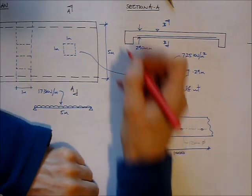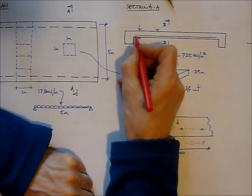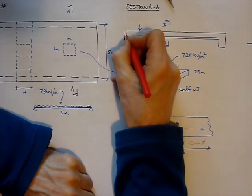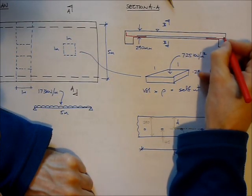Now we can carry this onto the supports, or we can curtail it and put some slightly smaller bars at the supports, as long as we lap them with that main steel.